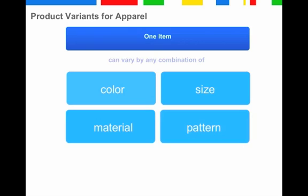Products can vary by any number of variants—size and color are the most obvious. Note that you only need to send us data for variant attributes if your product varies by that specific attribute. That means if your product varies only by color and size, obviously submit only those two attributes. You don't have to submit information for material and pattern. Products can vary by any combination and any number of variant attributes.